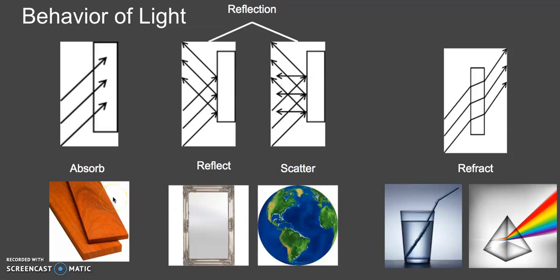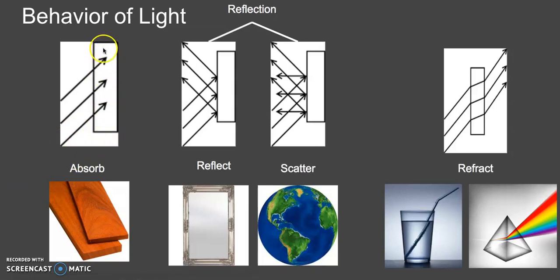We can also have absorption. For instance, with a block of wood, if we were to hold it on a really sunny day with the sun right above us outside, the block of wood would absorb all of the light and underneath it we would see a shadow. There'd be no light that comes through the wood. The light comes directly at the object, the object absorbs all of it — no light bounces back, no light comes through.